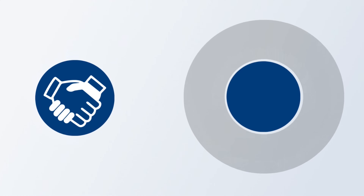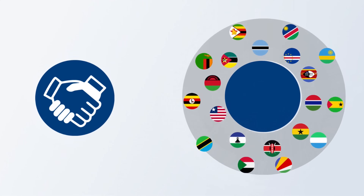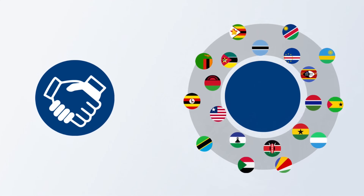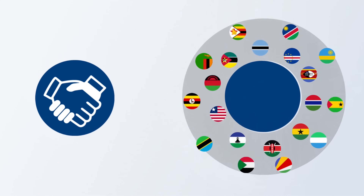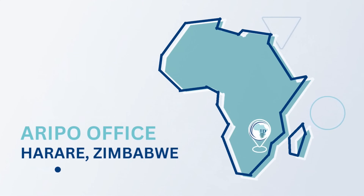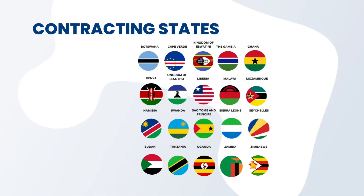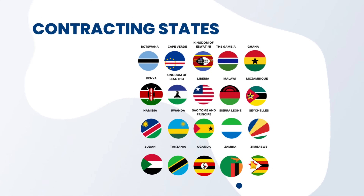Under the protocol, a patent applicant can designate any one of the Harare Protocol contracting states in which the applicant wishes the invention to be protected by filing one application. A patent application under the protocol can be made directly with the ARIPO office in Harare, Zimbabwe, or in any one of the following 20 contracting states.